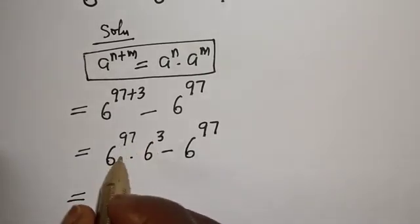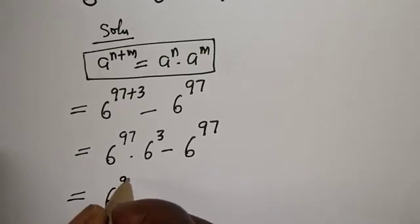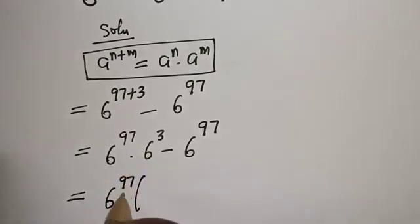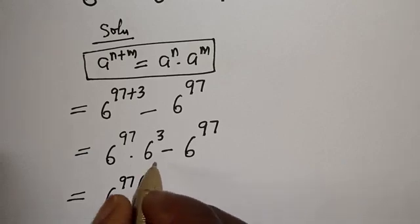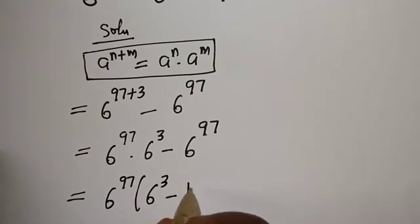From here, 6 raised to power 97 is common. Let's factor it out: 6 raised to power 97 in brackets, with 6 raised to power 3 minus 1.